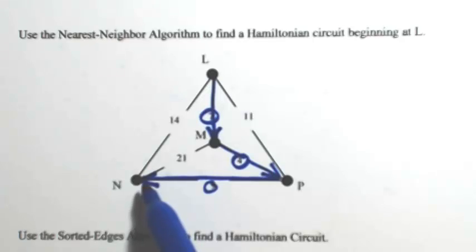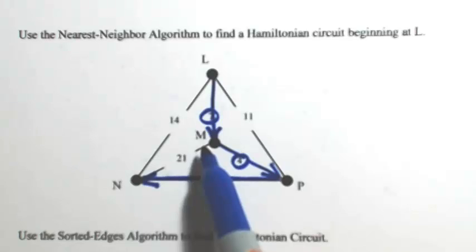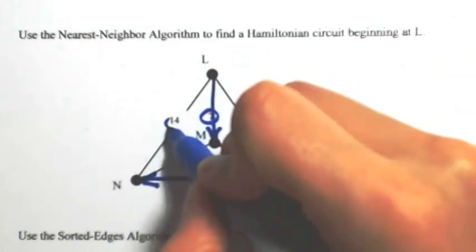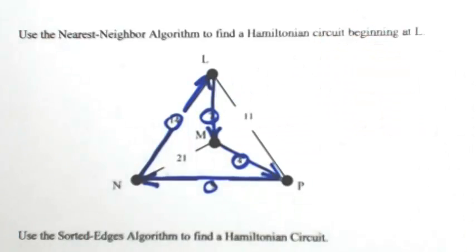And then from N, I can either go to M or L, but I don't want to go to M because then I'll be using that vertex twice. So then at this point, I'll just close out my circuit and go back to L.